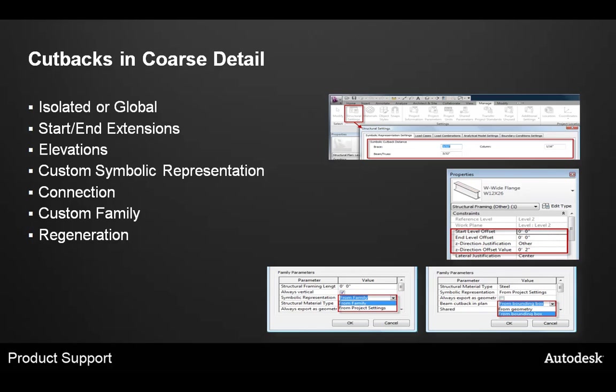Are you using custom symbolic representation? Check the beam family settings to see how the representation is defined. Edit the family, go to the Create ribbon, and select Category and Parameters. In this dialog, there is a symbolic representation family parameter that can be set as 'from project settings' or 'from family.' This determines whether the symbolic representation is defined by the family or the settings of the project in which it is placed.